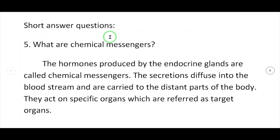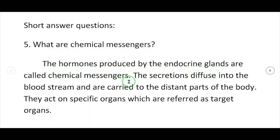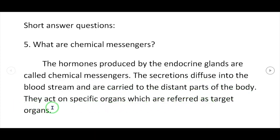Short answer question 5: What are chemical messengers? The hormones produced by the endocrine glands are called chemical messengers. The secretions diffuse into the bloodstream and are carried to the distant parts of the body. They act on specific organs which are referred to as target organs.